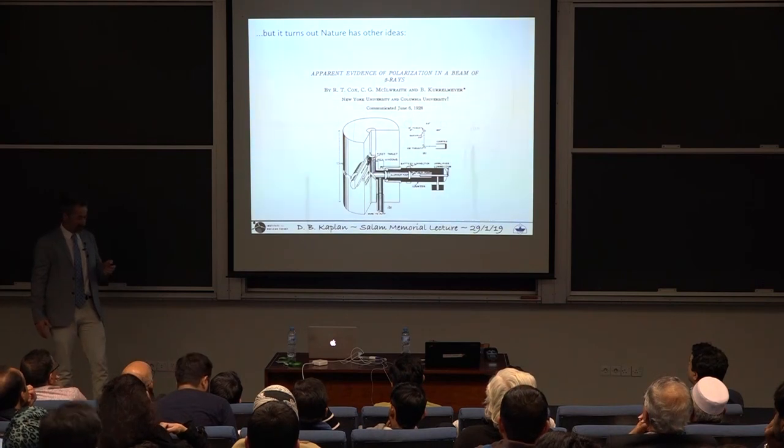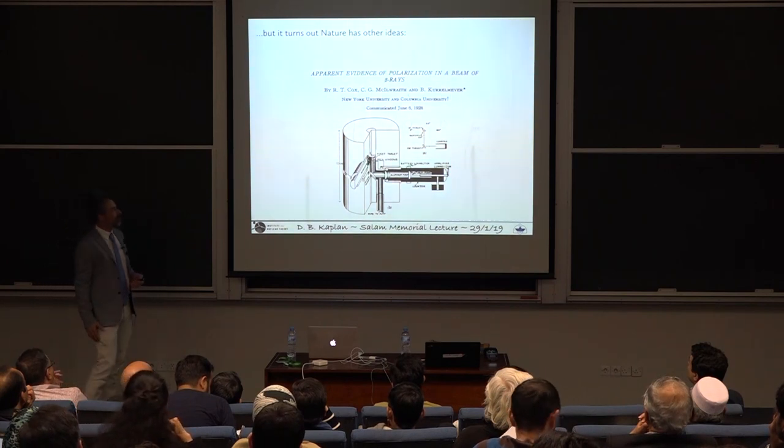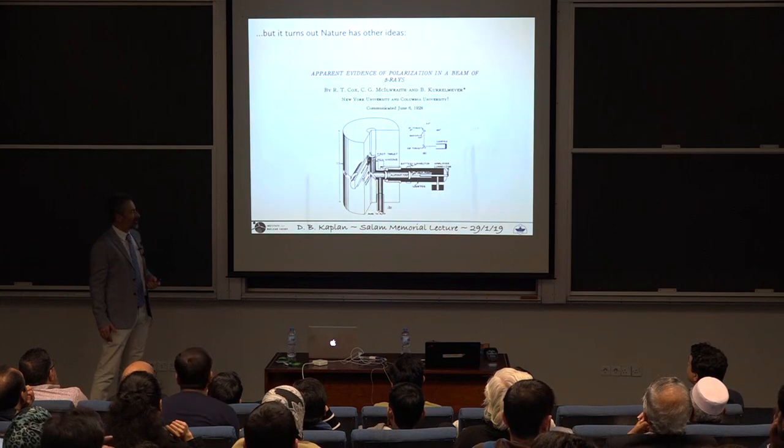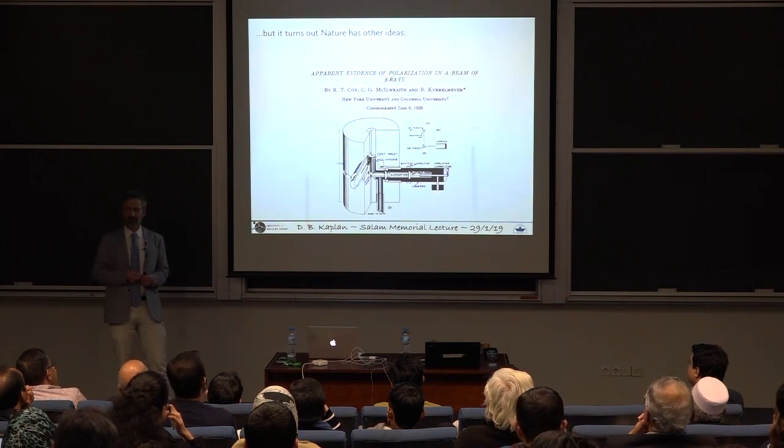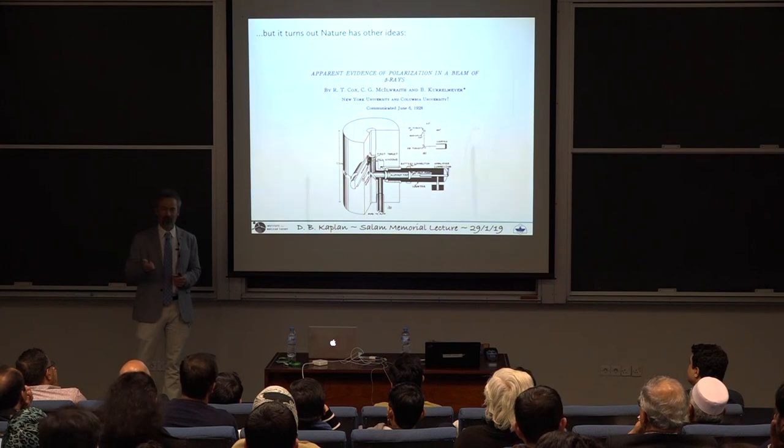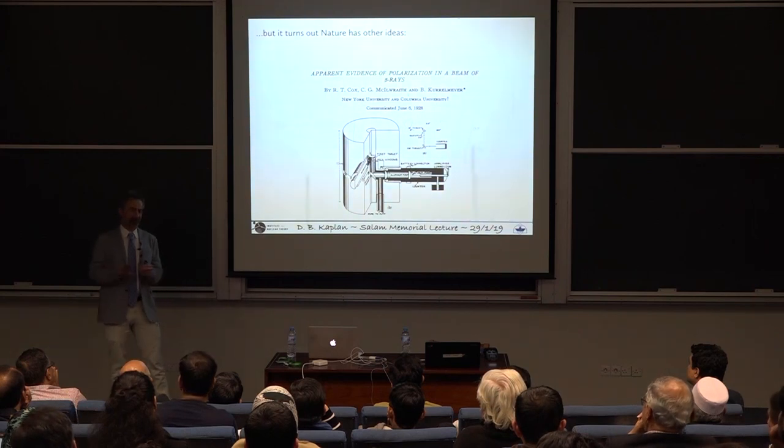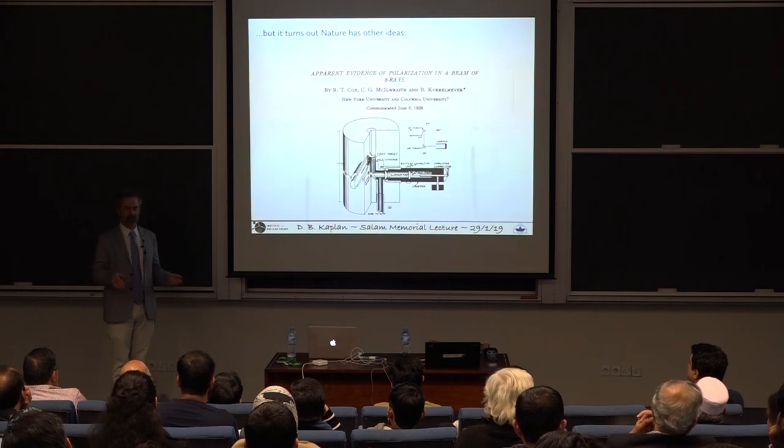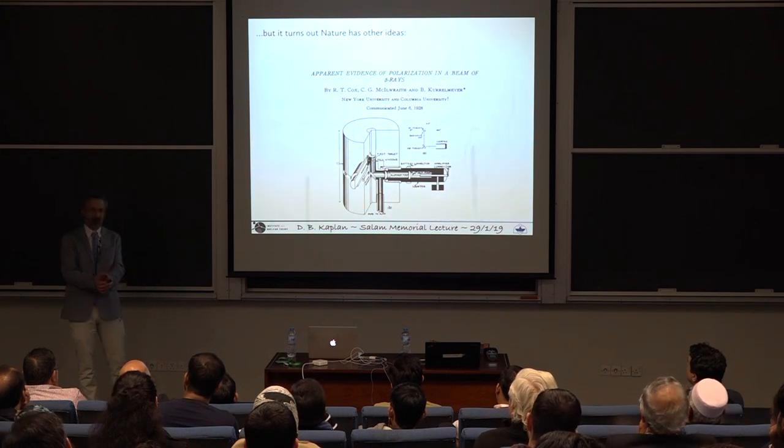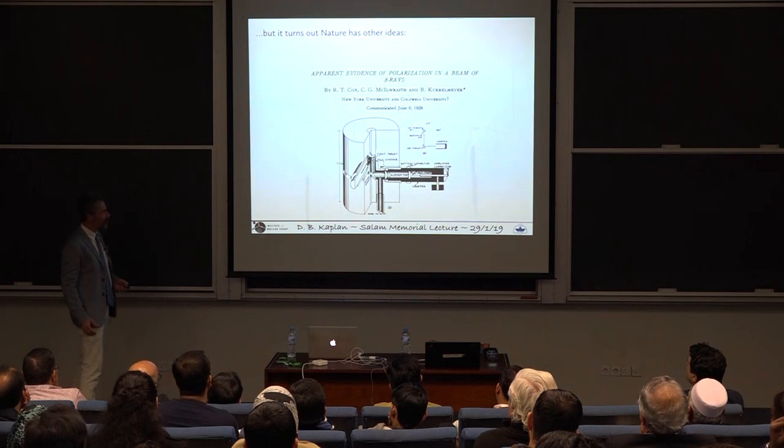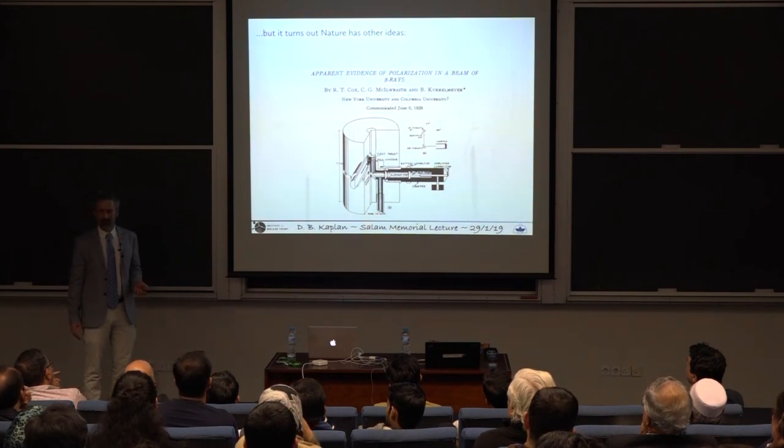Well, nature had different ideas, though. So, here's an experiment from 1928. It was about a year or two after Dirac theory. This guy named R.T. Cox from Columbia and his collaborators decided, for some unknown reason, I don't know what it is, to take the electrons that come from radioactive decay, called beta rays, and measure their polarization. He wanted to see whether they were left or right-handed, or a mix of both. There was absolutely no reason to do this. Everybody knew that you'd get equal numbers of left and right, because if it didn't, then the world would be not invariant under parity.